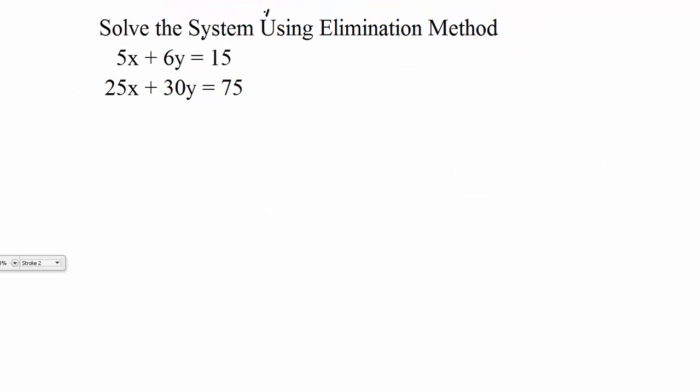Okay, so here we have another example. We're still solving the system using the elimination method. So that means we need to look over this problem and see if anything happens to cancel out from the beginning. If we were going to add our x values together, 5 plus 25 would give us 30. And our y values, 6 plus 30 would give us 36y. So nothing would cancel out from the beginning, which means this one will need to be tweaked. So again, I'm going to cancel out the x values. And the first thing that 5 and 25 has in common is 25.